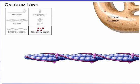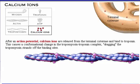After an action potential, calcium ions are released from the terminal cisternae and bind to troponin. This causes a conformational change in the tropomyosin-troponin complex, dragging the tropomyosin strands off the binding sites. Click the terminal cisternae to release calcium ions and see this effect.